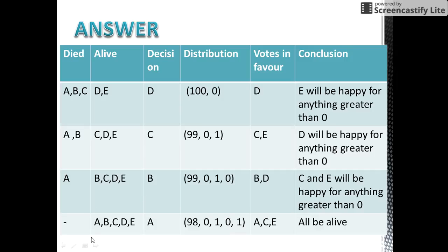Now A, being the most experienced pirate, would give a proposal to distribute the coins in such a way that he himself gets 98 coins and C and E each get 1 coin, so that they vote in favor of the proposal proposed by A. Now B and D would get 0 coins.